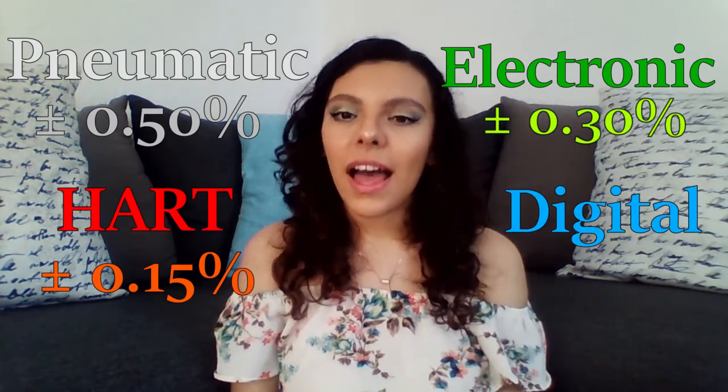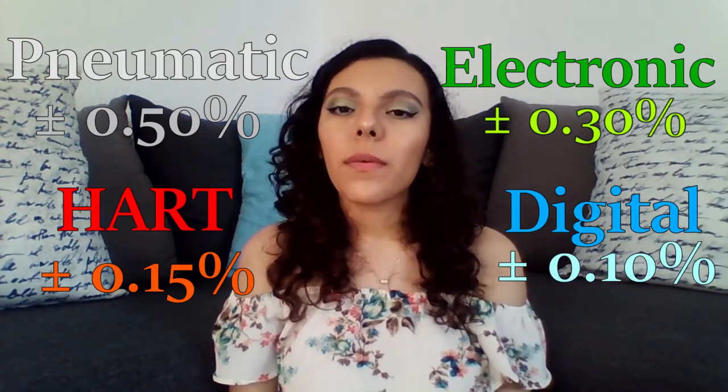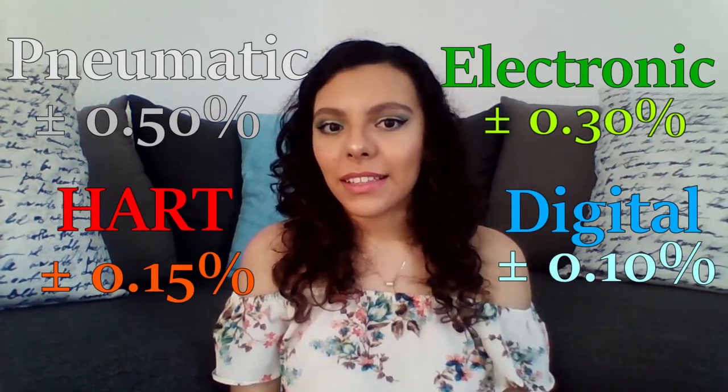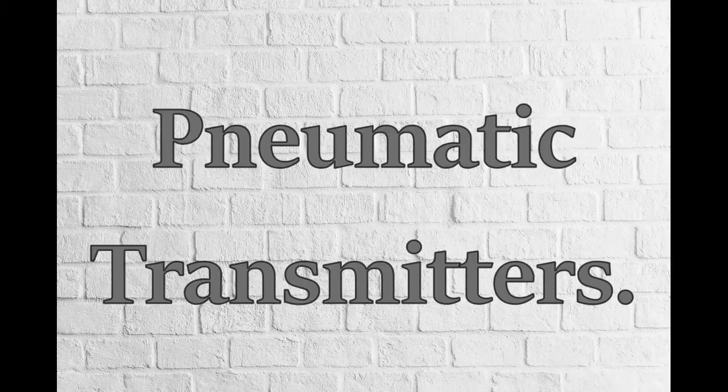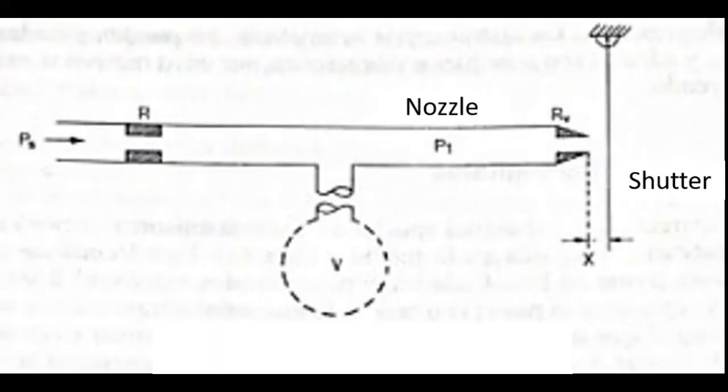and digital signals have ±0.10%. Remember that accuracy is measured in terms of inaccuracy. This type of pneumatic transmitter is based on a nozzle-flapper system that converts the movement of the primary measuring element into a 3 to 15 PSI pneumatic signal.